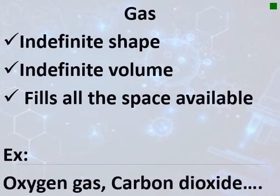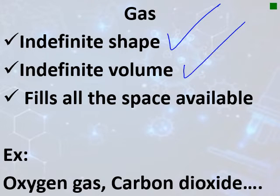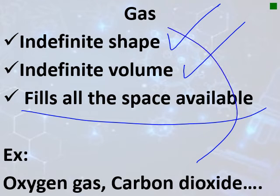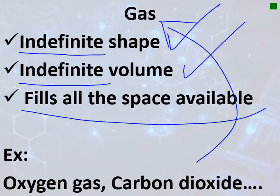The third state of matter is gases. Gases have an indefinite shape and also an indefinite volume — they fill all the space available to them. Examples include oxygen gas, carbon dioxide, and nitrogen gas.